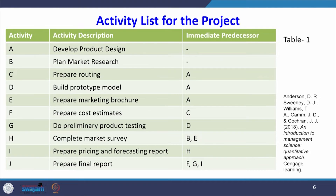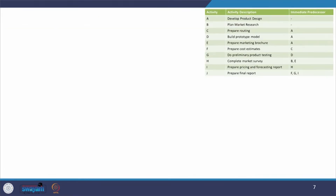Activity A and B have no precedence. C, D, E have precedence A. Like that, there are other activities with preceding activities. The precedence constraint needs to be considered while drawing the network.